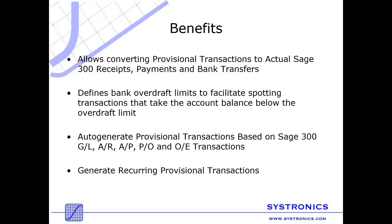Cash Flow Forecasting is not just a convenient projecting tool — it also simplifies the process of creating transactions in Sage 300, since the program enables you to convert provisional transactions into actual transactions. It is just a matter of seconds to update subledgers and bank account balances. Moreover, with this application you can stop worrying about inadvertently exceeding bank overdraft limits — in your forecasts you define bank overdraft limits to facilitate spotting transactions that take the account balance below those limits.